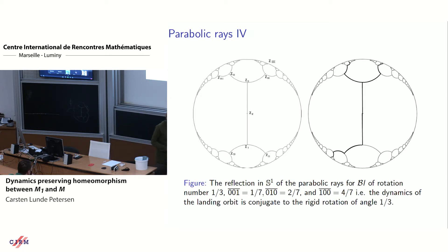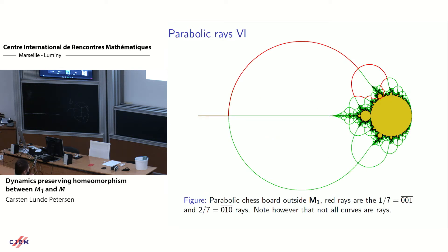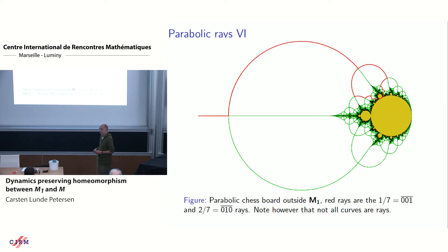It turns out that we have a natural parametrization of the complement of the connectedness locus M1, which resembles the way that we parametrize the complement of the Mandelbrot set, by the position of the second critical value in the parabolic basin relative to the first. That also gives a notion of parabolic rays in the complement of the connectedness locus. Here is an example of a ray coming down: it's the 1/7th ray and the 2/7th ray coming down, delimiting what we call a wake of rotation number 1/7th.